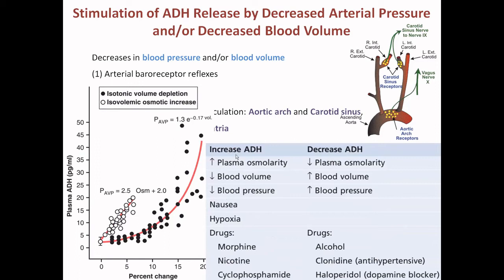As a summary: increased ADH means it will help in restoring the water level of the body — reabsorption of water — and decrease water in the urine, producing concentrated urine. Conditions that increase ADH include: high plasma osmolarity (high solute concentration in plasma), decreased blood volume as in the cardiac atrium, decreased blood pressure, and clinical situations like nausea, hypoxia, and drugs such as morphine, nicotine, and cyclophosphamide. Their role is to promote water reabsorption.